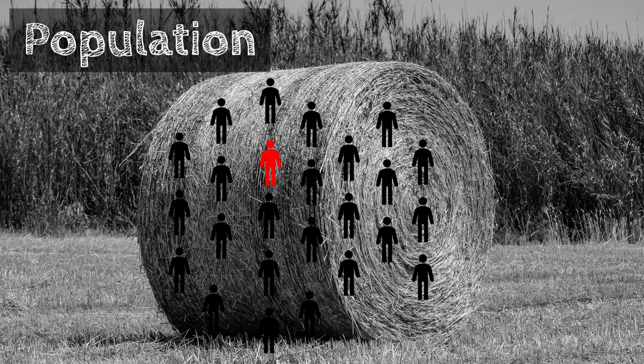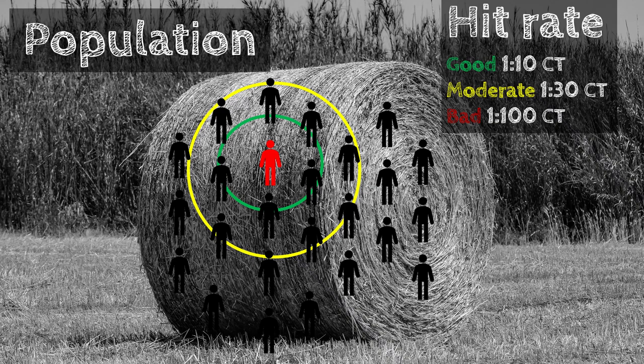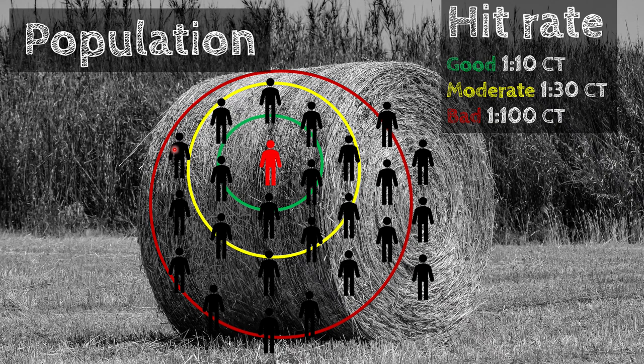To find the needle in the haystack, we do need CT scans and tests — and a hit rate of one in ten is actually a good hit rate for many conditions, especially rare ones. But if we're too liberal with our tests, we risk becoming more problematic for the system than actually helping. Emergency medicine is finding the needle in the haystack without burning the hay — without causing problems for the 99% of patients who don't need anything emergently and would probably be better off going home with follow-up, using time as a test.